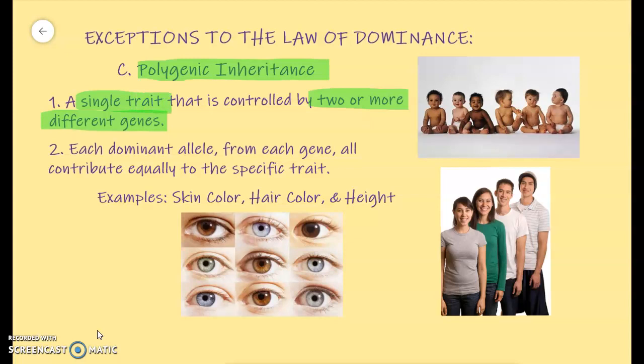Some examples of that in humans are skin color, hair color, and height. We obviously don't just have one, two, or three versions of a trait. We have this big, huge range — from really light skin to really dark skin, or really light eyes to really dark eyes, super short to super tall. Something is controlling how all that works, and that is what we call polygenic inheritance.